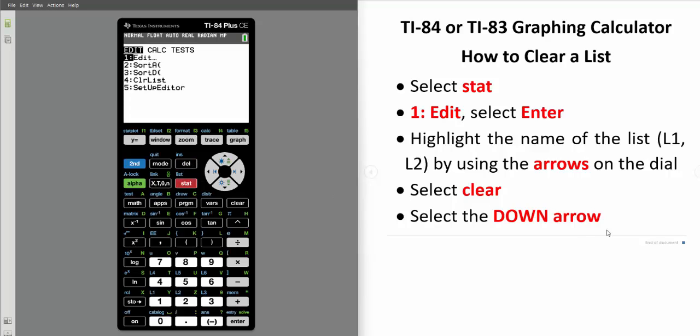Select the STAT button. This is the button in the third row below the main window and to the left of the dial key. Select the first option, number 1, Edit. You can do this by selecting the number 1 on your calculator or by simply selecting the Enter button on the right side of the bottom row of buttons. I'll select Enter.